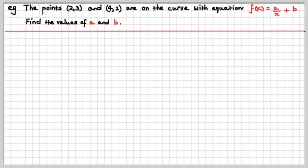Okay, the points (2,3) and (4,2) are on the curve with equation f(x) equals a over x plus b. That's a hyperbola, that one, because it's a 1 over x kind of function. We have to find the values of a and b. So we substitute (2,3) into the equation for f(x) and we get that. Have a look, see if you agree.